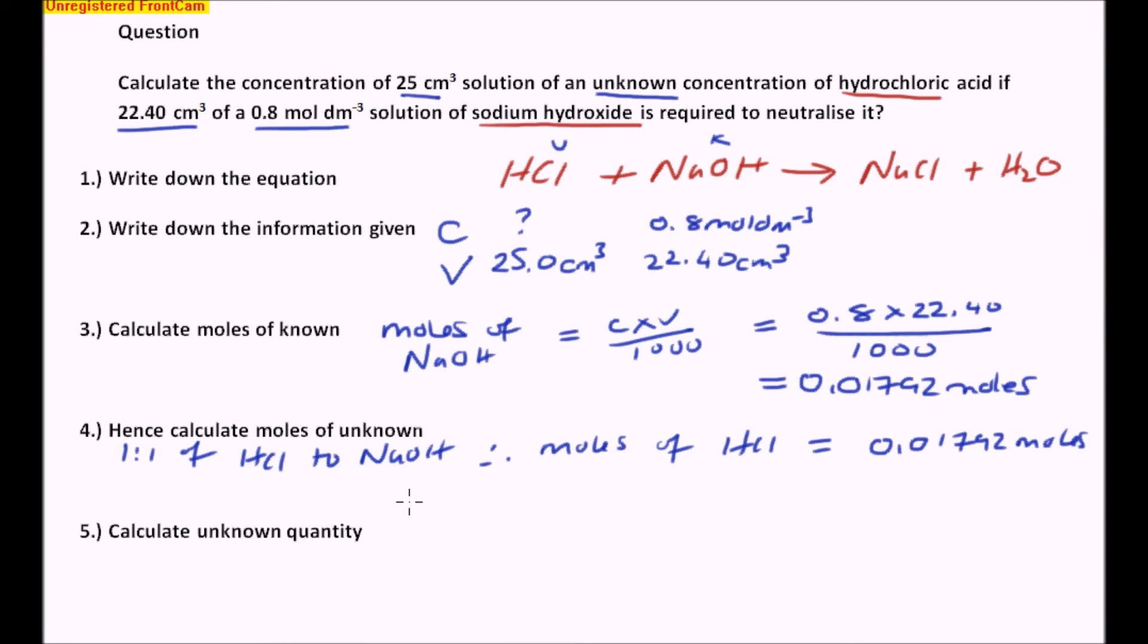Okay, so finally, I'm going to work out my unknown, which is the concentration of my HCl. So the concentration of HCl can be worked out by rearranging the formula. So the concentration of HCl is given to me by the formula 1,000 times by the number of moles of the HCl, which I just worked out, divided by the volume of HCl that I've got present.